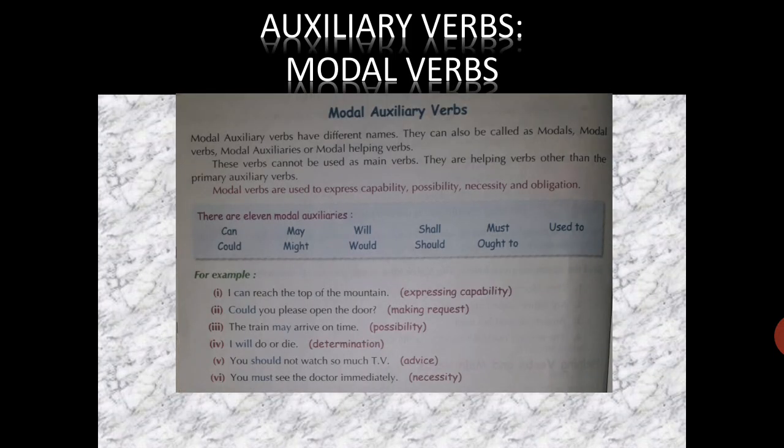Now talking about the auxiliary verbs — second one, that is modal verbs. Modal auxiliaries are also called modals or modal helping verbs. These cannot be used as main verbs; they are supporting verbs that help the main verb. They are used to describe or express capabilities, possibilities, chances, necessity, and obligation. There are 11 modal auxiliaries: can, could, may, might, will, would, shall, should, must, ought to, and used to. These will be discussed in a separate chapter on modals.